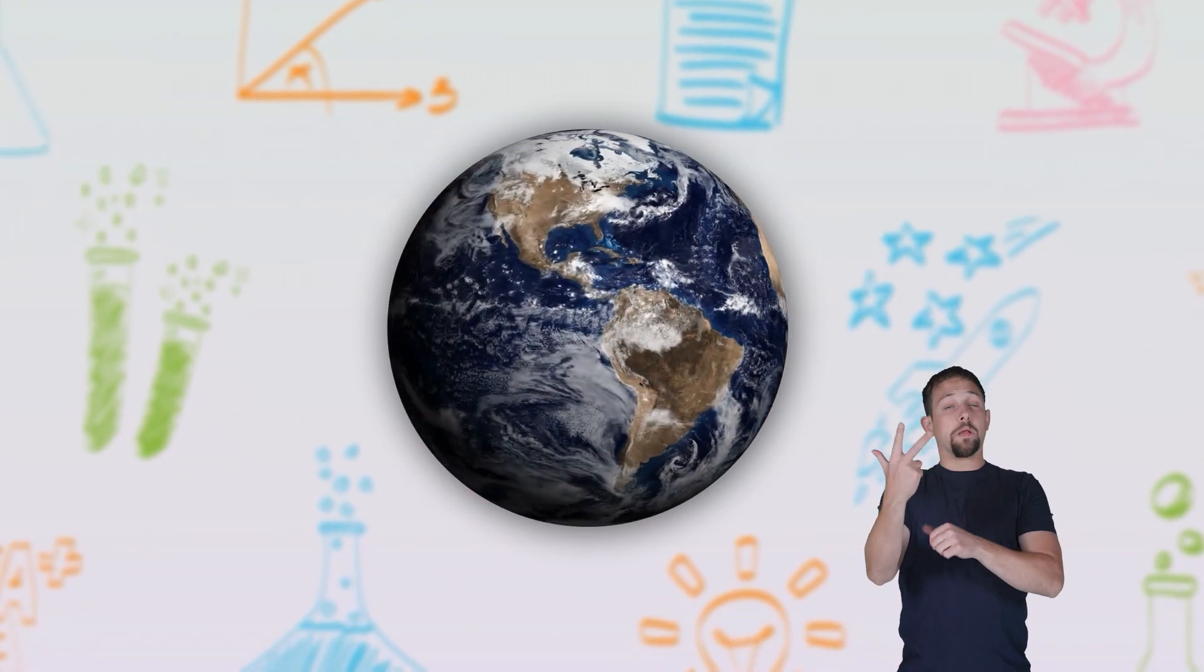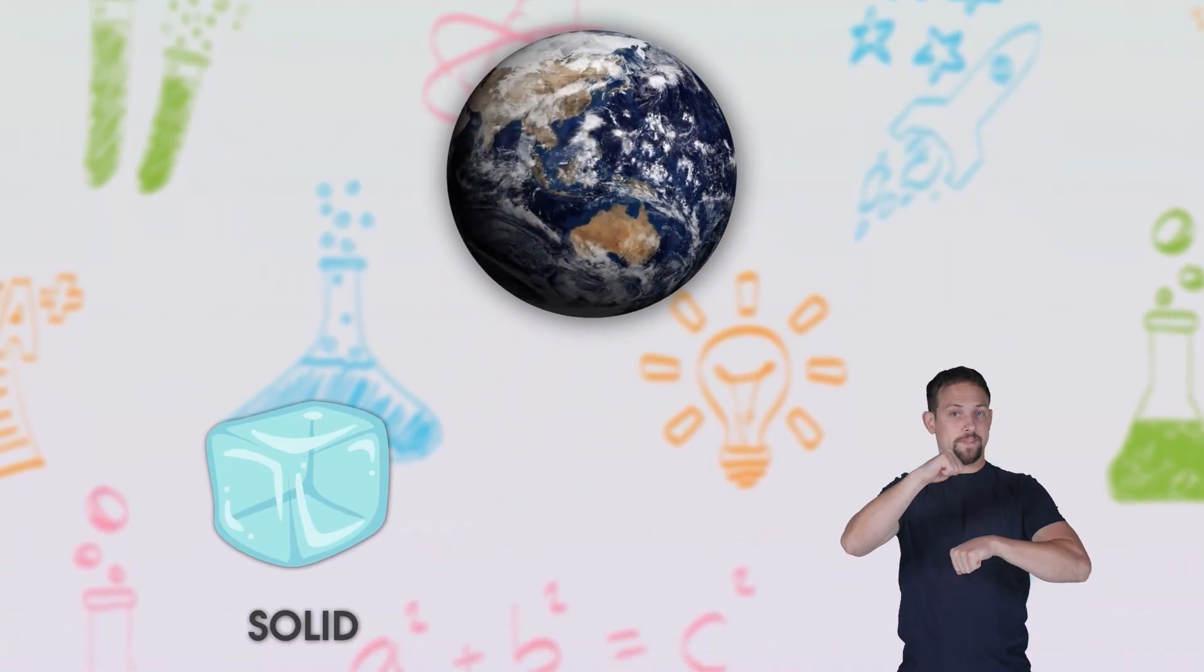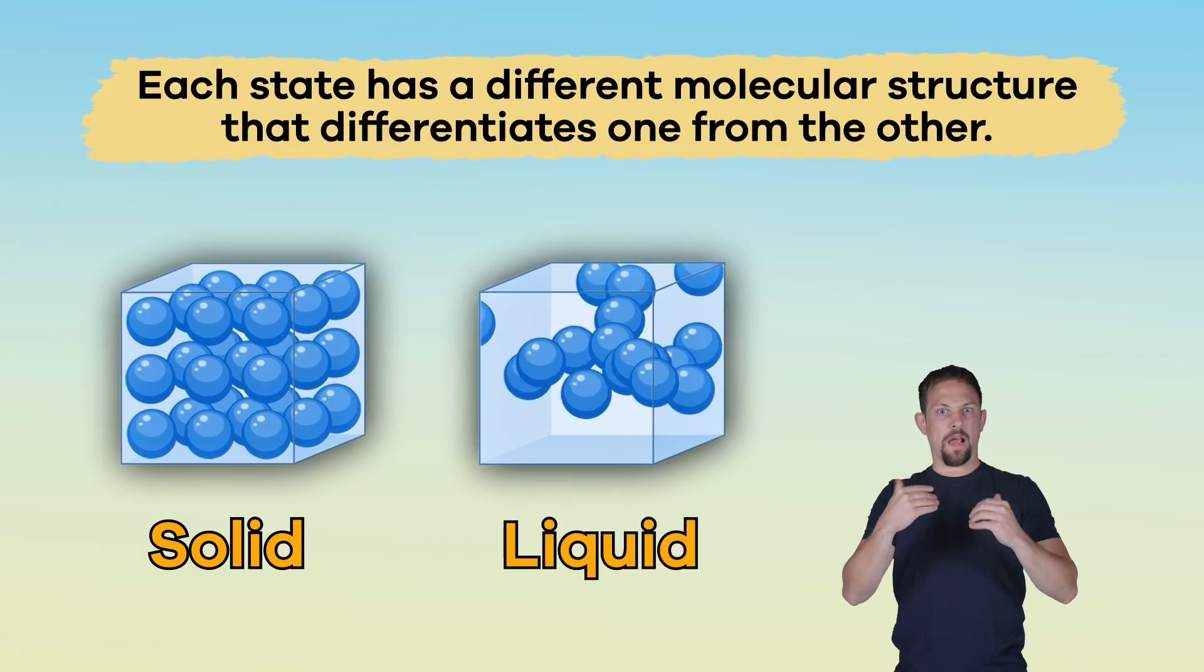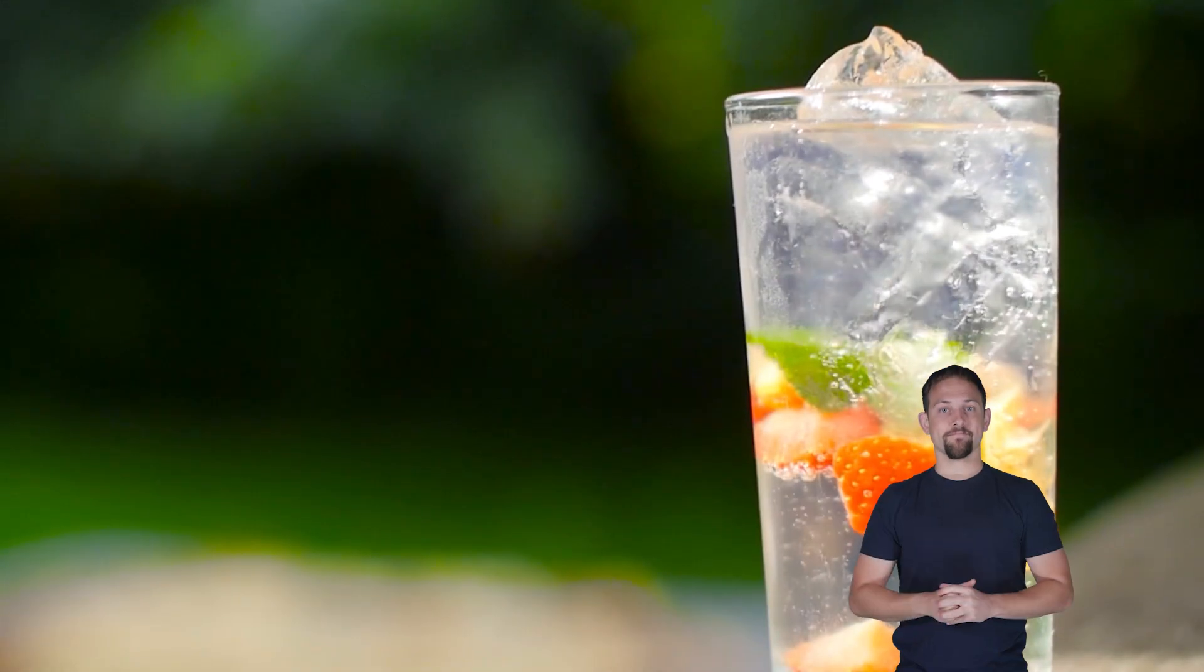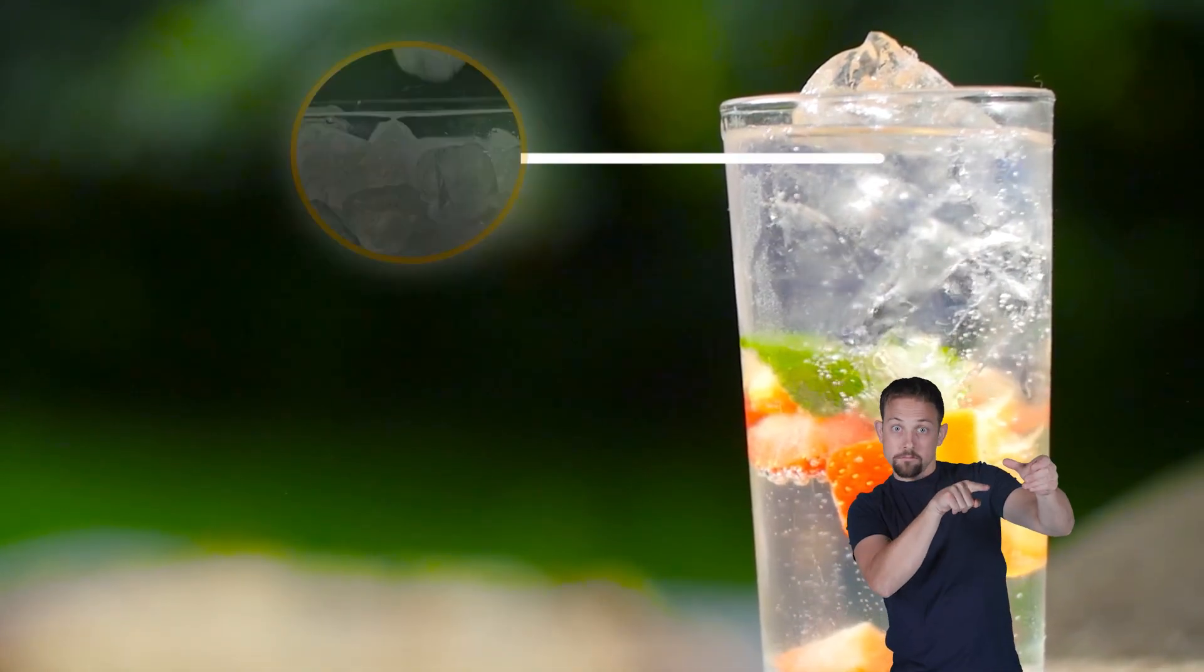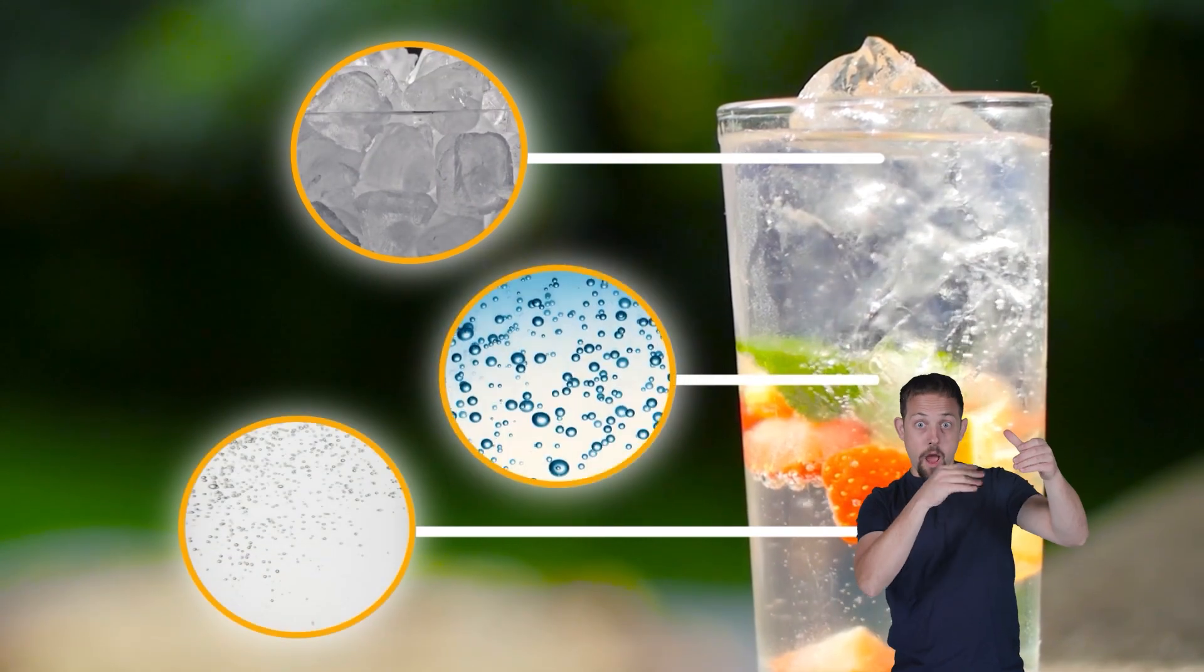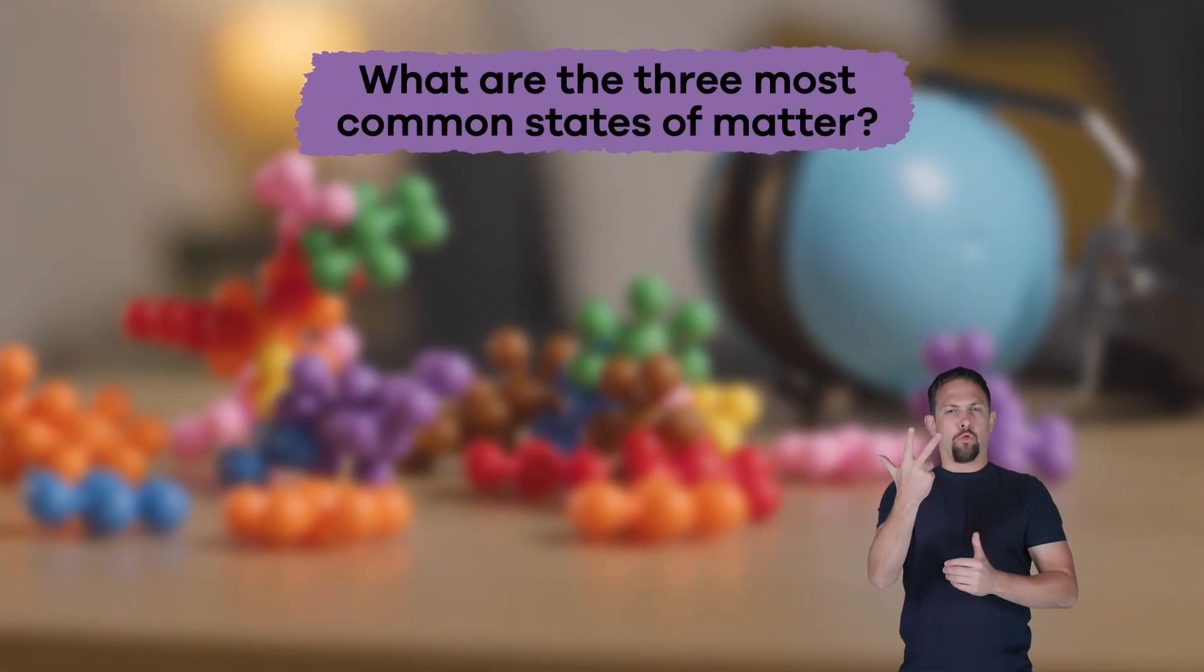The Earth's three most common states of matter are as follows: solid, liquid, and gas. Each state has a different molecular structure that differentiates one from the other. Let's take another look at your glass of soda. The ice cubes are a solid, the soda is a liquid, and the carbonation bubbles are a gas.